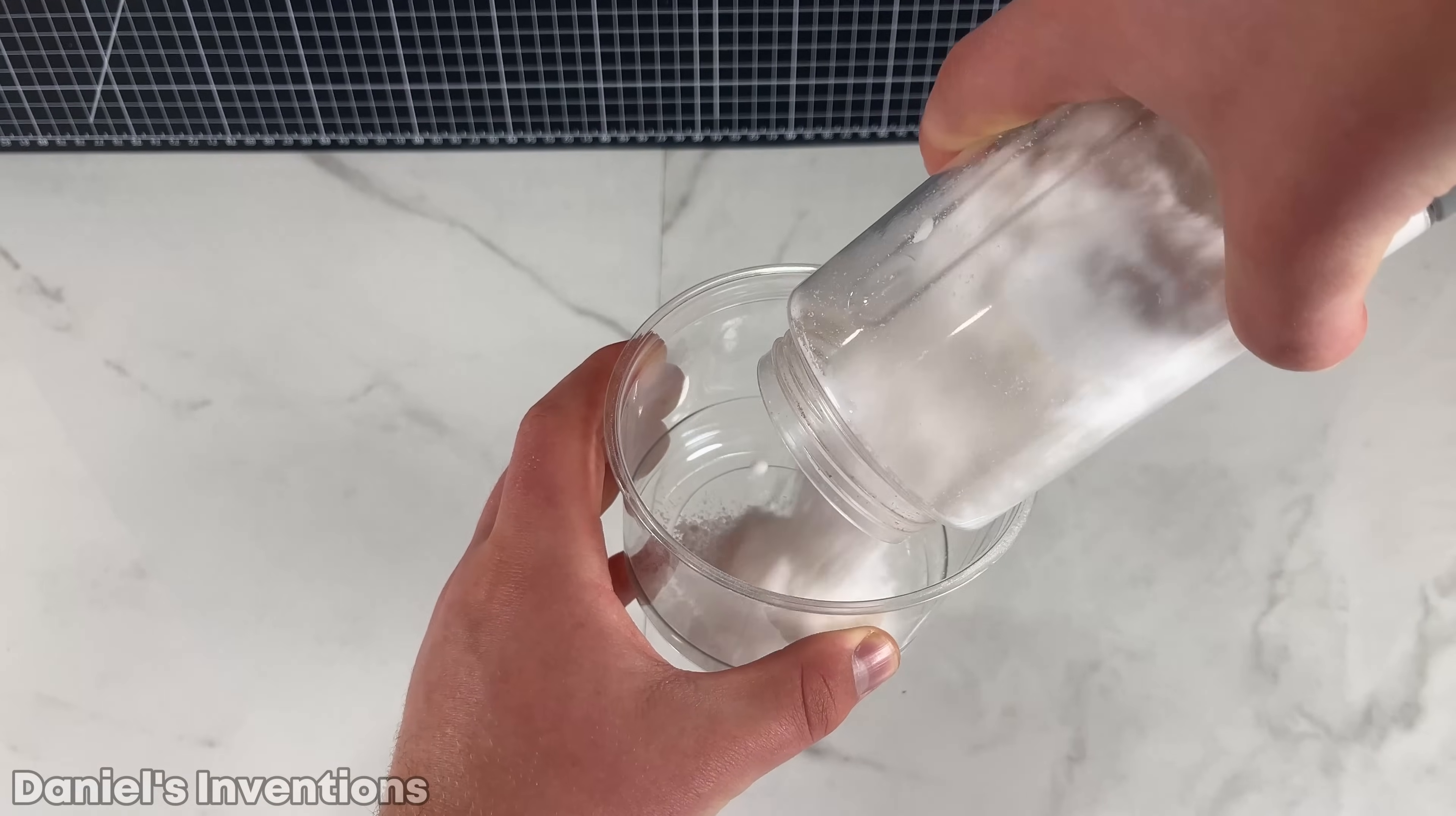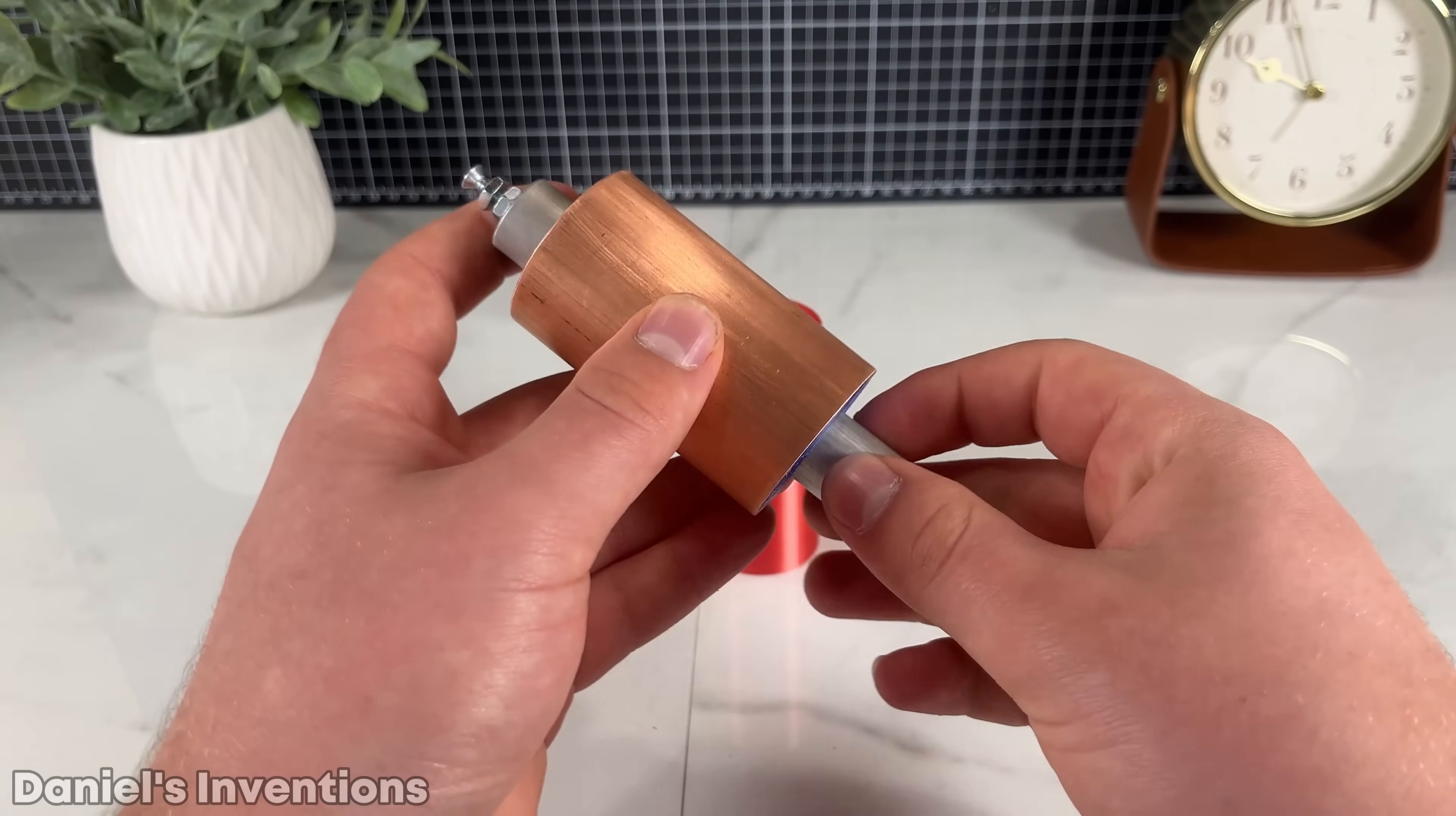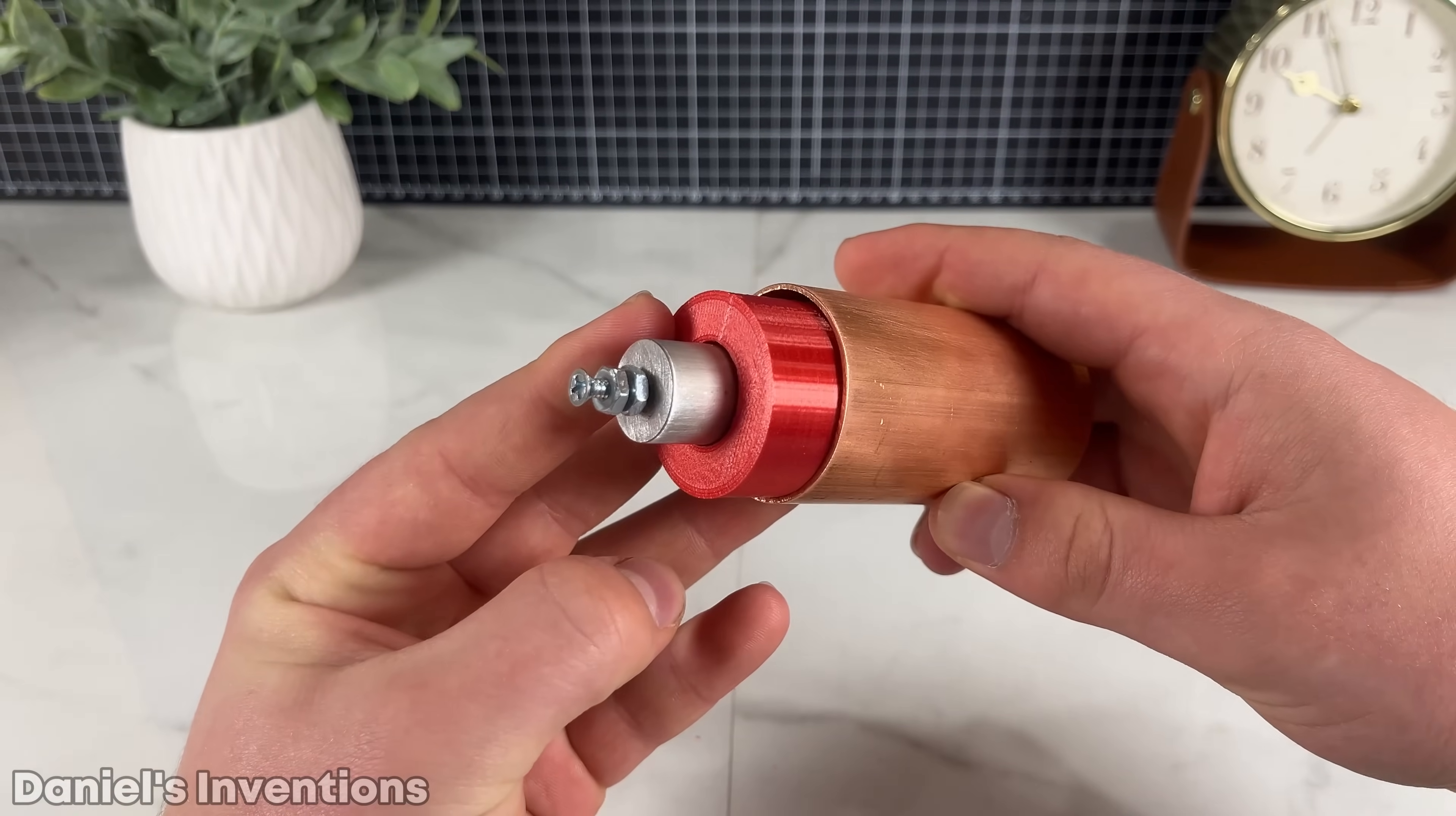I 3D printed a solid spacer that will be used to evenly space apart the core from the casing. I will use the elongated solid spacer to compact the ingredients into the cell.